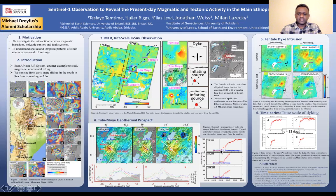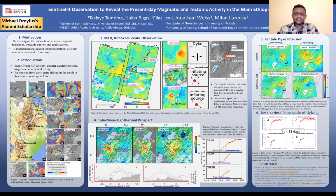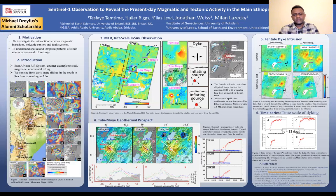Looking at the time series, deformation started in late 2015, continued reforming, and appears to stop in late 2018 and beginning of 2019. We are still investigating what is really going on in this geothermal prospect area.